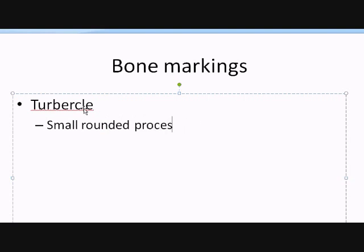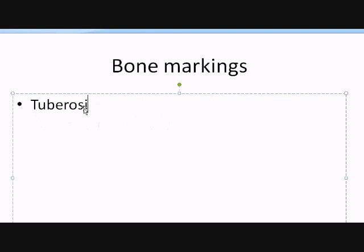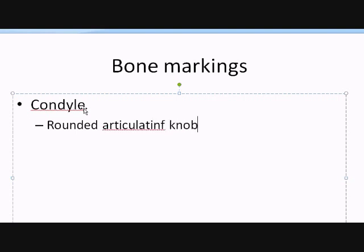Next we have tuberosity. A tuberosity is a large, rounded process. You can find tuberosity of the knee, and you can also find tuberosity of the humerus. Another bone marking is the condyle — a condyle is a rounded articulating knob. You can find a condyle at the humerus as well.